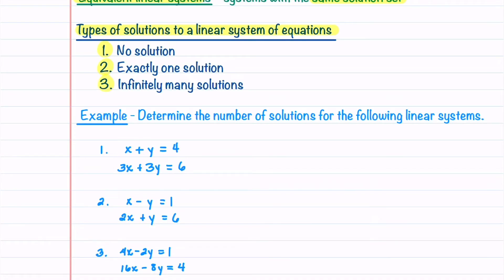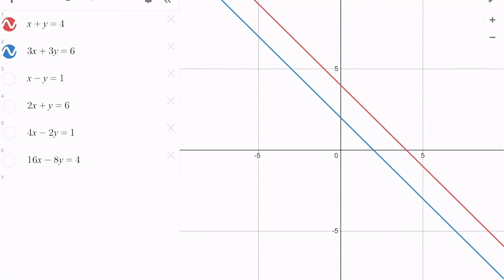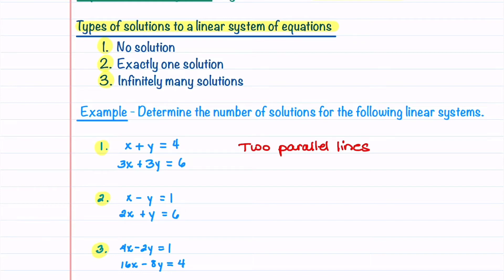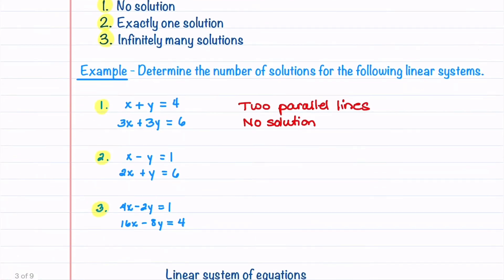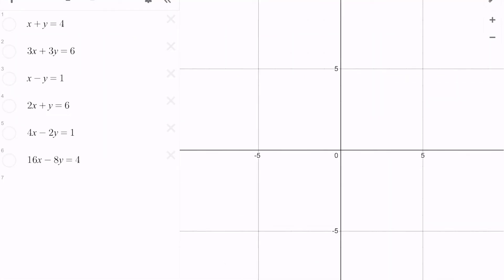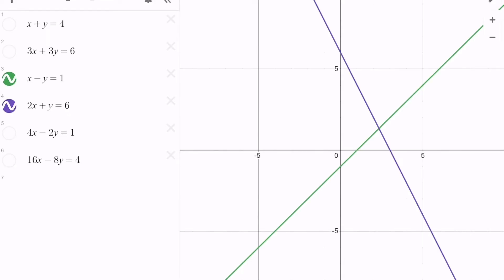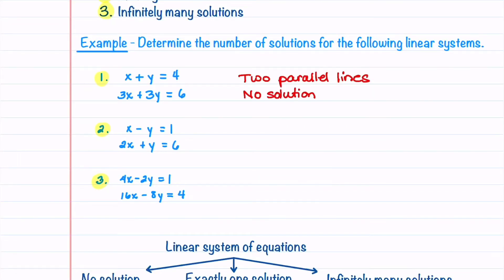We'll go over an example to understand this from a geometric perspective. We have three linear systems and want to determine the number of solutions for each. Using Desmos, we can see that our first linear system contains two parallel lines. These lines never intersect, so this system has no solution. In our second example, Desmos shows two intersecting lines that cross at one point, so there is exactly one solution.